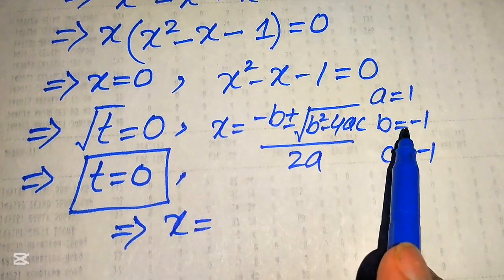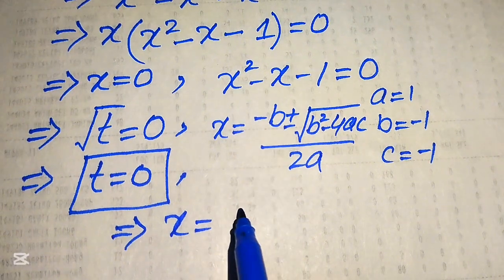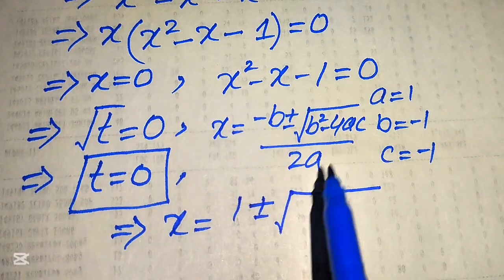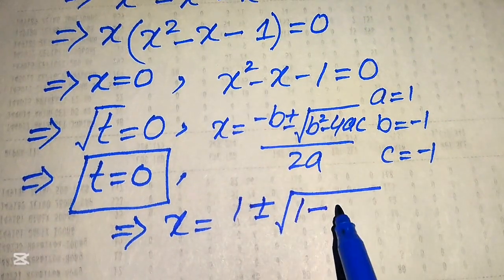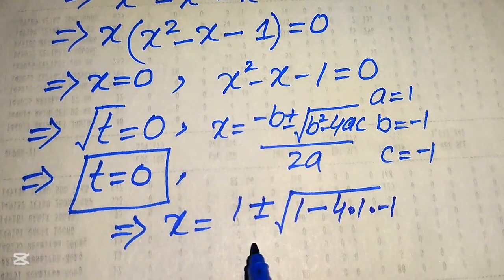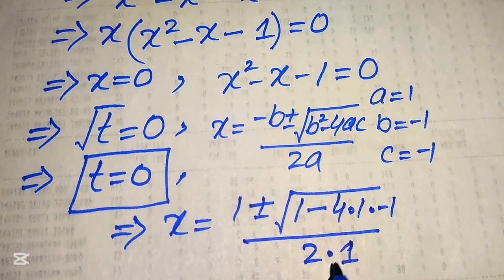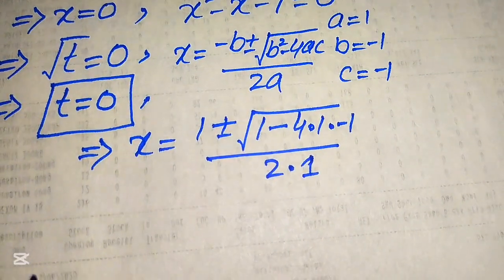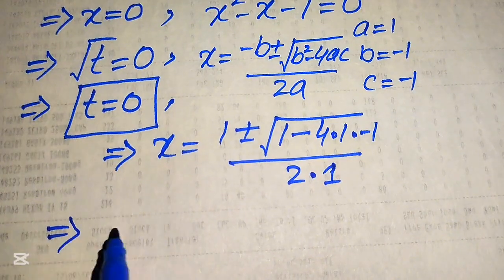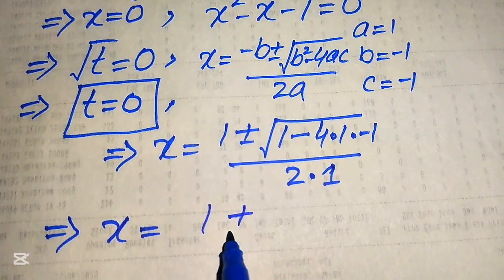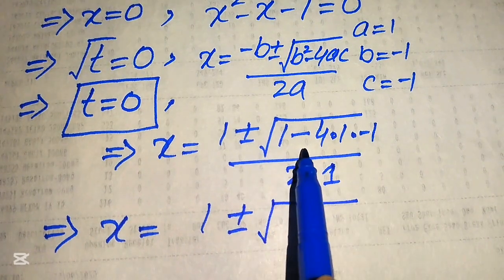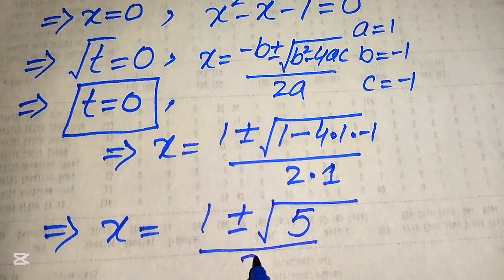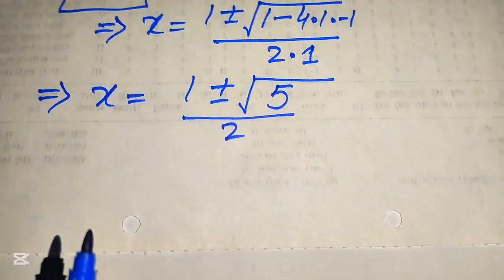Substituting the values: negative b, where b is minus 1, gives plus 1. Then plus or minus the square root of b squared — that is, minus 1 squared equals plus 1 — minus 4 times a times c, which is 1 times minus 1, all divided by 2 times a, where a equals 1. Simplifying, minus times minus gives plus, so we get x equals 1 plus or minus the square root of 1 plus 4, which is 5, divided by 2.